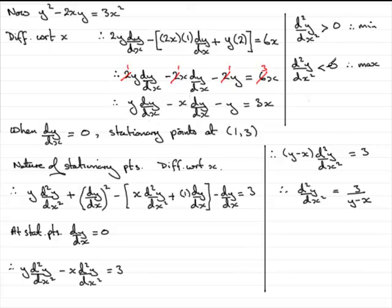So, we need to just check the sign now of d²y/dx squared by substituting our values at the stationary point, which are x is 1, y equals 3 into here. So, if we say when x equals 1, y equals 3, therefore, d²y/dx squared is going to equal 3 divided by y minus x, that's 3 take away 1, which is 2. And 3 over 2 is greater than 0. So, what we have is a local minimum.